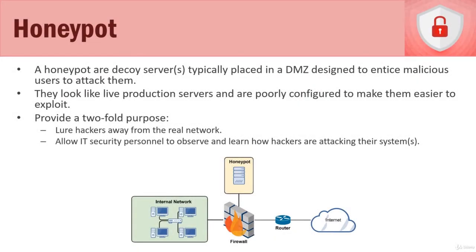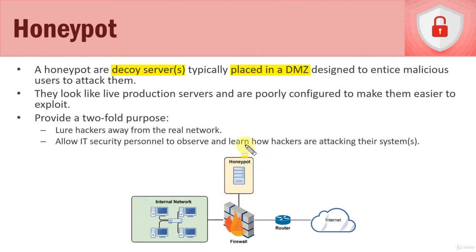In this video we're going to talk about honeypots. So what is a honeypot? Here's a diagram. A honeypot is a decoy server or multiple servers, and they're typically placed in a DMZ, which we see down here. We have our firewall, we have our DMZ over here with a honeypot in it, and then our internal network protected on a different interface on the firewall. The whole purpose of these honeypots being in a DMZ is they're designed to entice malicious users — meaning hackers — to attack them rather than our internal network.